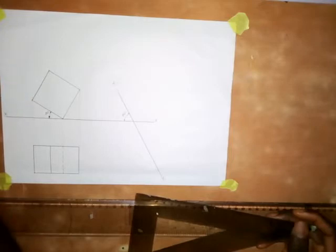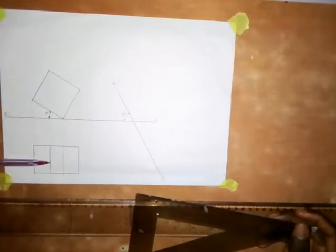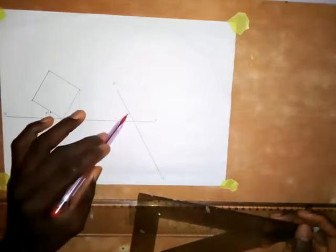Here I want to show you how you can draw the auxiliary elevation of a square prism whose front elevation and plan are given. So this is the front elevation and this is the plan. The construction goes as follows: we have to draw the auxiliary elevation on the plane x1y1.